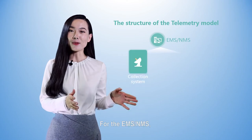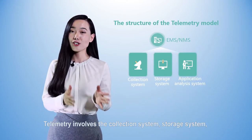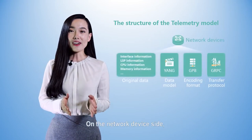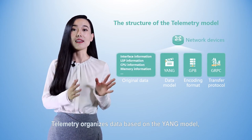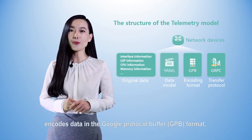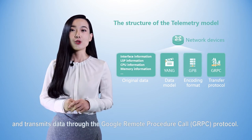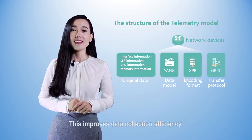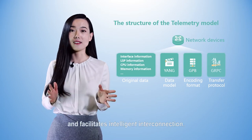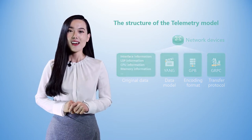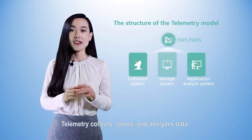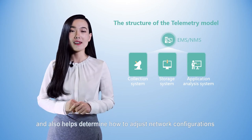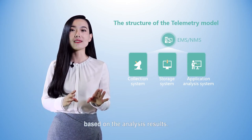For the EMS or NMS, telemetry involves the collection system, storage system, and application analysis system. On the network device side, telemetry organizes data based on the YANG model, encodes data in the Google Protocol Buffer (GPB) format, and transmits data through the gRPC protocol. This improves data collection efficiency and facilitates intelligent interconnection. On the EMS or NMS side, telemetry collects, stores, and analyzes data, and also helps determine how to adjust the network configurations based on the analysis results.